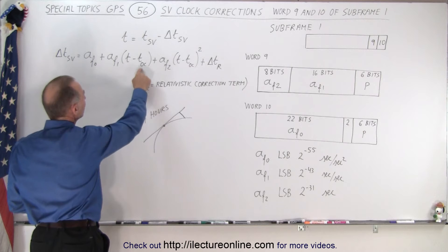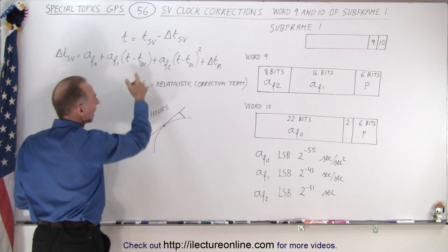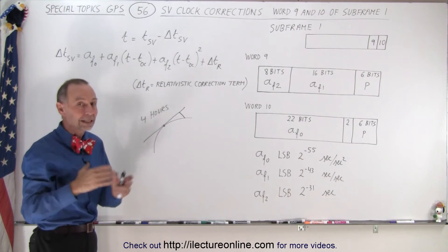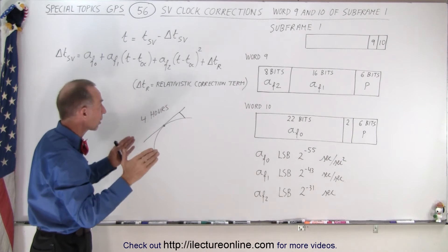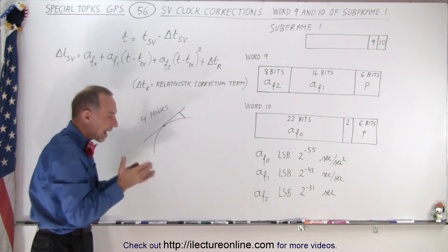Well first of all we need the TOC, the time of the clock as we saw in word 8. In word 8 we gave you the time of clock so we want to know what time of the week it is so we can then find out where we are on this curve.